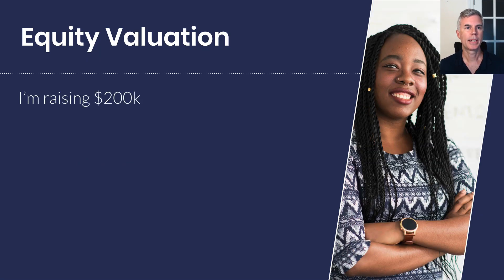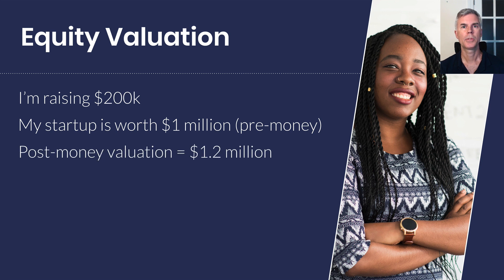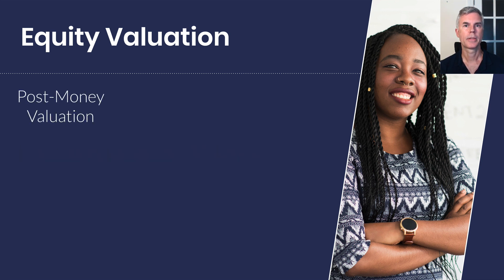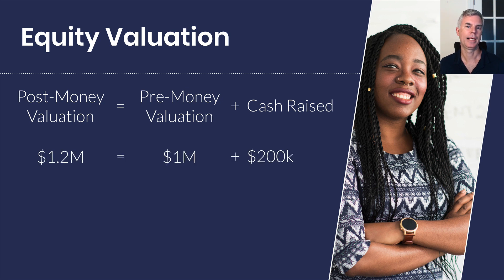When you go out to raise money, let's say you're raising $200,000 and you say your startup is worth $1 million pre-money — that means the post-money valuation is $1.2 million. The formula is: post-money valuation equals pre-money valuation plus the cash raised. So in this case, we've raised $200,000 on a $1 million pre-money valuation, giving a post-money valuation of $1.2 million.